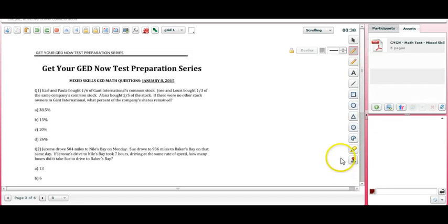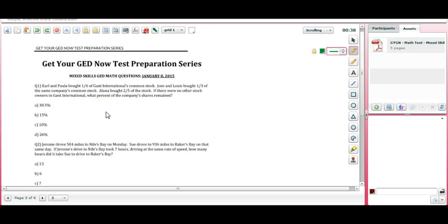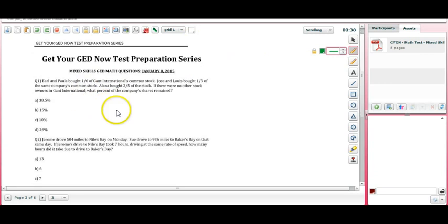So the Get Your GED Now test preparation series, here is just a practice test giving you some GED style questions to get this new year going. Earl and Paula bought one-sixth of Gantt International's common stock, Jose and Luis bought one-third of the same company's common stock, Alana bought two-fifths of the stock.